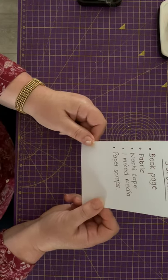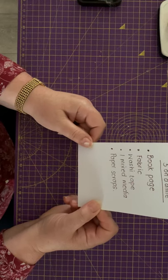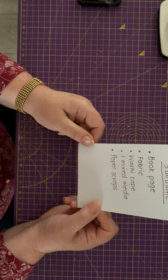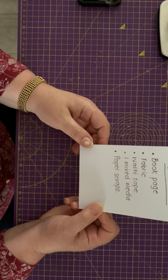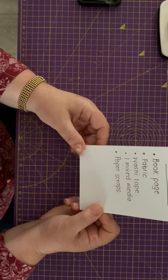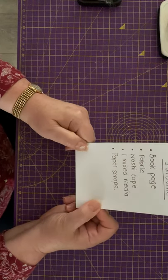For August we've got to use book pages, any book pages really, bits of fabric, washi tape, one form of mixed media and paper scraps. So that's what our challenge is for this month.